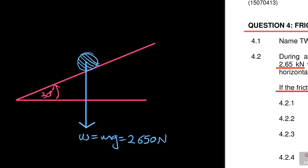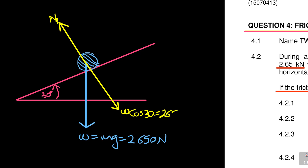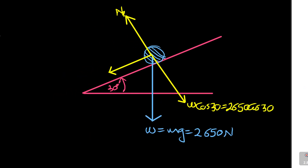You have to finalize everything on this block. You definitely need to know the components. You've got the reaction — the normal reaction N — and then opposite it you have the component of weight, which is W cos 30, the same as 2,650 cos 30. And then going down the plane, along this straight line going down the plane, you also have W sin 30, which is equal to 2,650 sin 30.